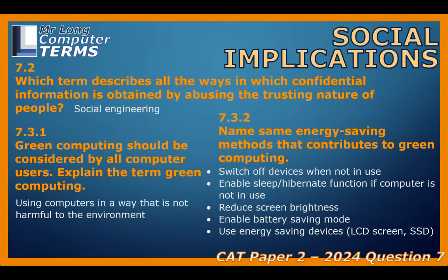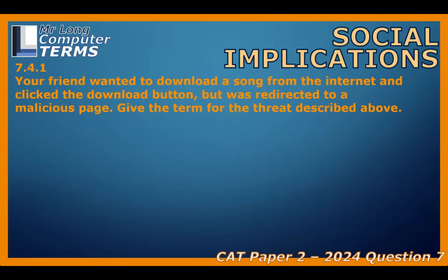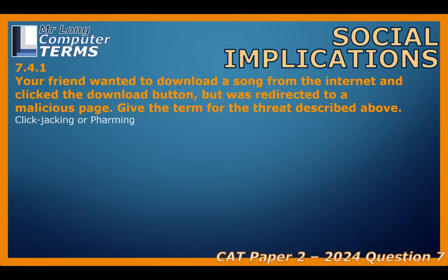Let's dive into one more specific kind of online trap: something called clickjacking or pharming. Imagine your friend wants to download a song, finds a site, clicks the button that looks like the download button, but suddenly they're redirected to some malicious-looking page. Clickjacking is basically when an attacker overlays an invisible button or link on top of a legitimate-looking one — so you think you're clicking 'download song' but you're actually clicking their hidden 'install malware' button. Pharming is even nastier — it involves messing with the system that translates website names into IP addresses, so even if you type the correct web address like your bank's website, pharming can redirect your browser to a fake lookalike site without you realizing.